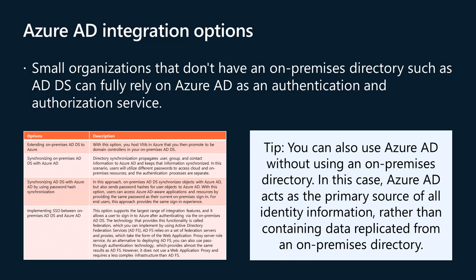Small organizations without an on-premises directory such as ADDS can fully rely on Azure AD as an authentication and authorization service. However, most companies search for a way to integrate on-premises ADDS with Azure AD. Microsoft offers cloud-scale identity and access management via Azure AD, which provides several options for integrating ADDS with Azure. The Azure AD directory is not an extension of an on-premises directory — rather, it's a copy that contains the same objects and identities. Changes made on-premises are copied to Azure AD, but changes made in Azure AD are not replicated back. You can also use Azure AD without an on-premises directory, in which case Azure AD acts as the primary source of all identity information.